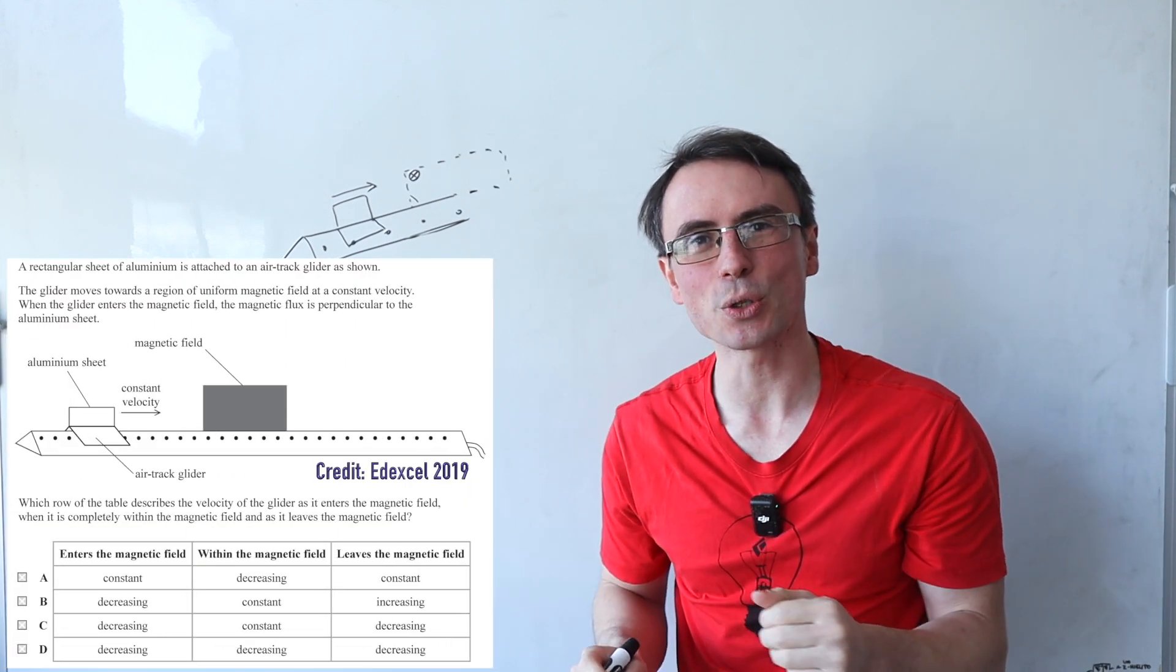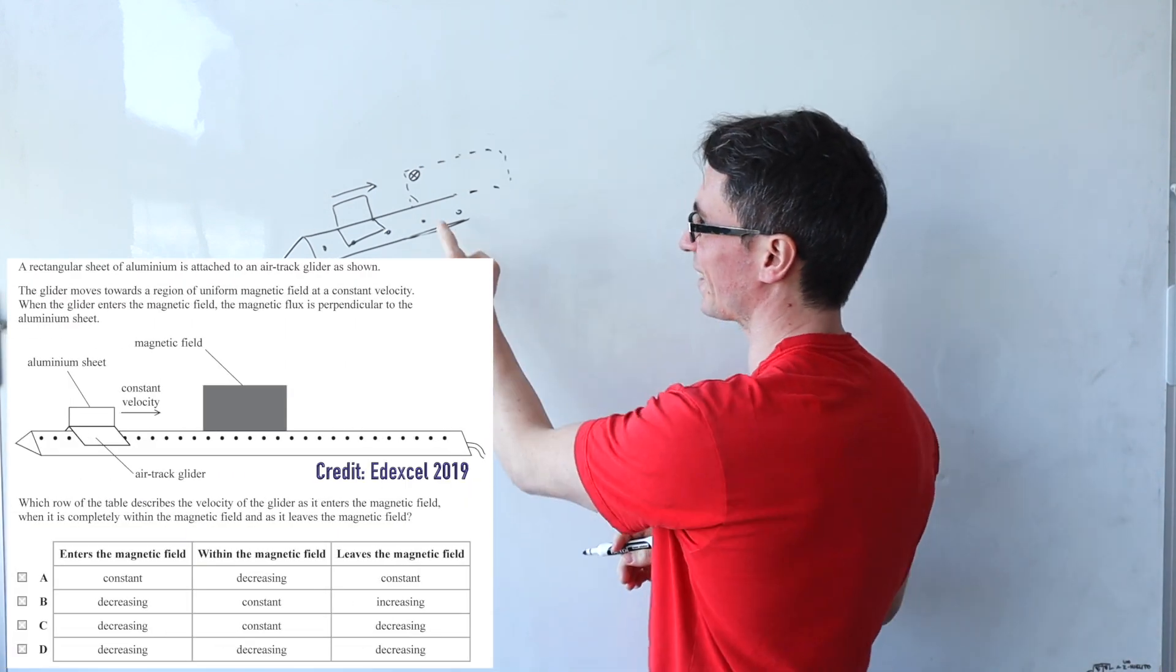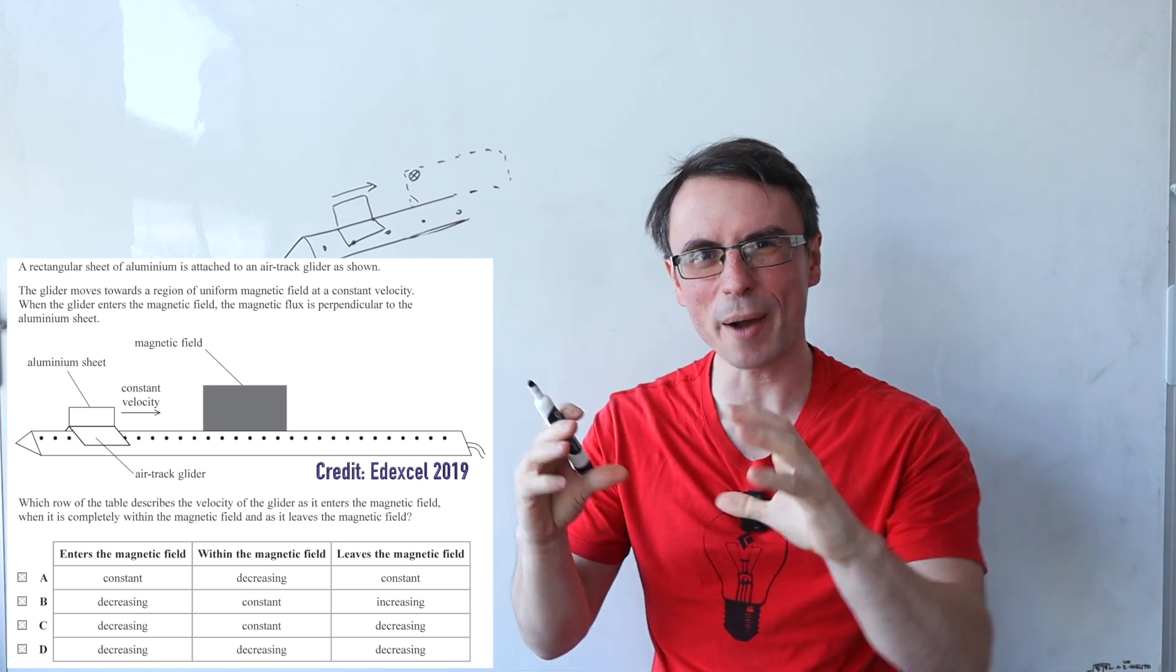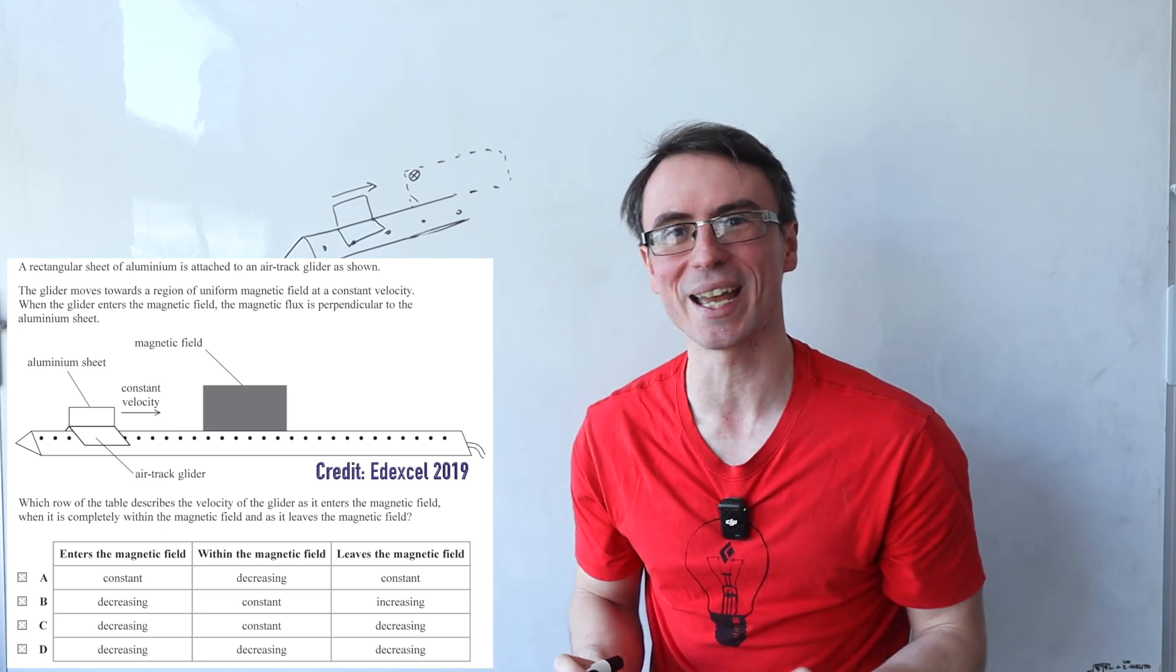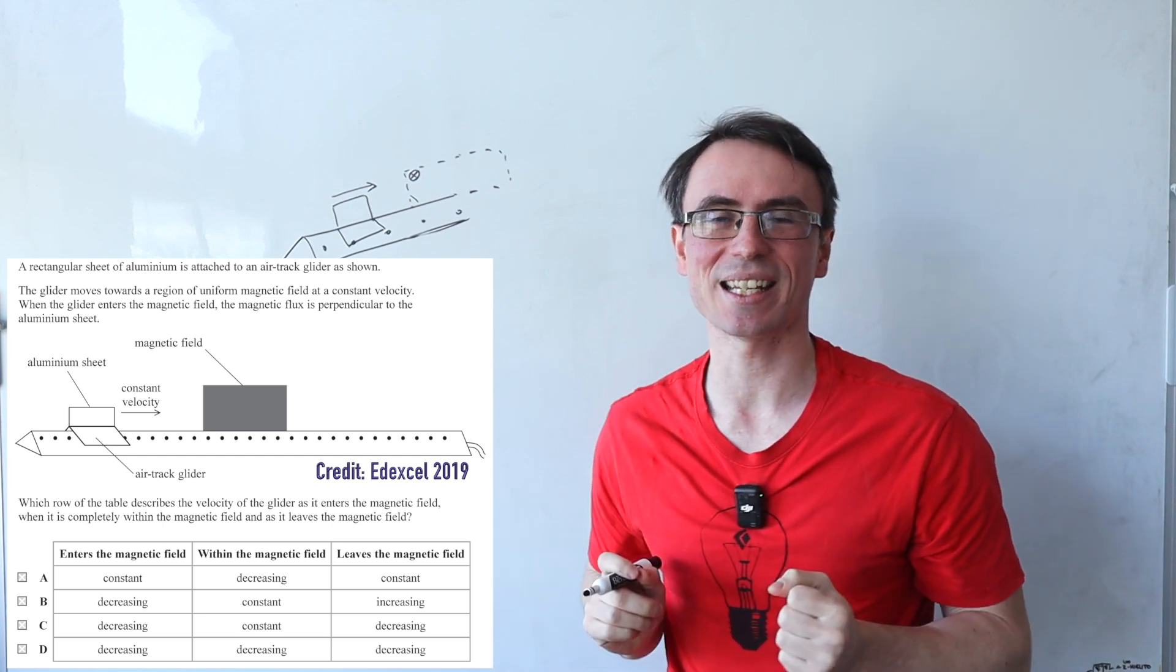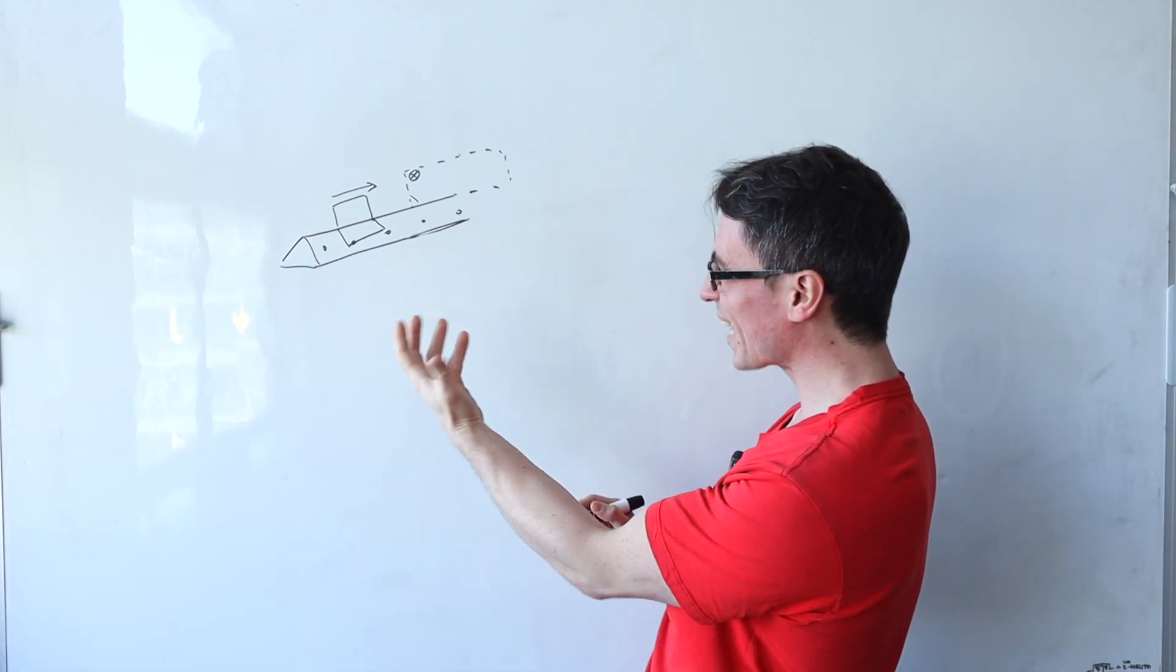The question is, what's going to happen to the velocity of the glider as it enters the field, while it's completely within the field and moving through it, and while it is exiting the magnetic field? Well, let's analyze the situation.